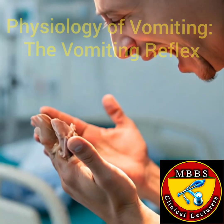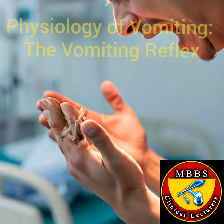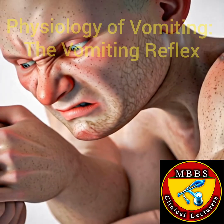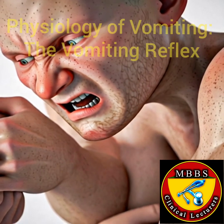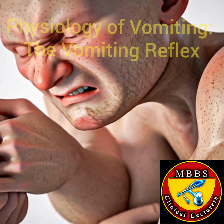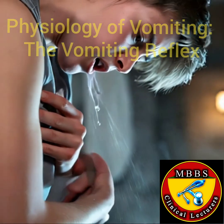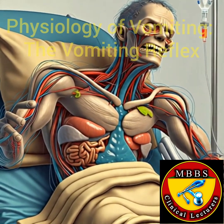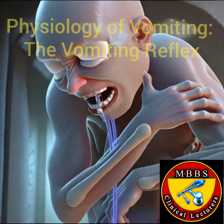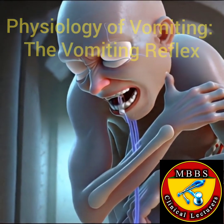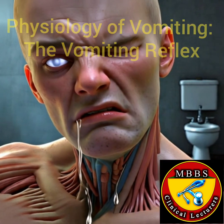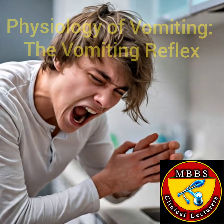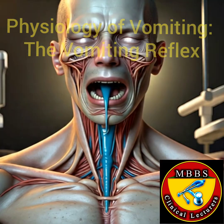Step 1 - Stimulation: The vomiting center in the brainstem receives signals from various sources, including: 1. Chemoreceptors in the area postrema, detecting toxins in the blood. 2. Stretch receptors in the stomach and intestines. 3. The vestibular system, related to balance and motion sickness. 4. Higher brain centers, involving emotional and psychological factors.